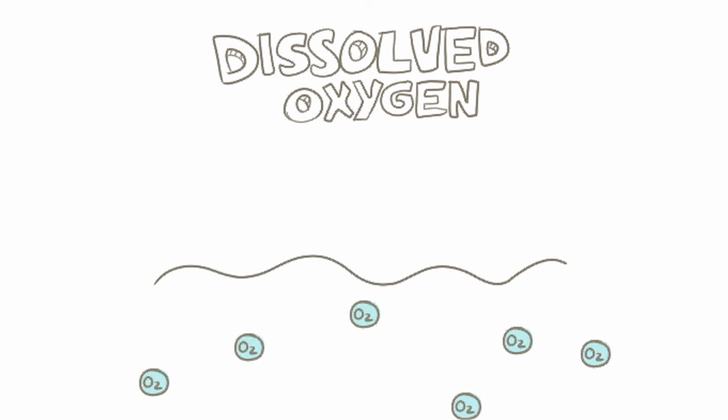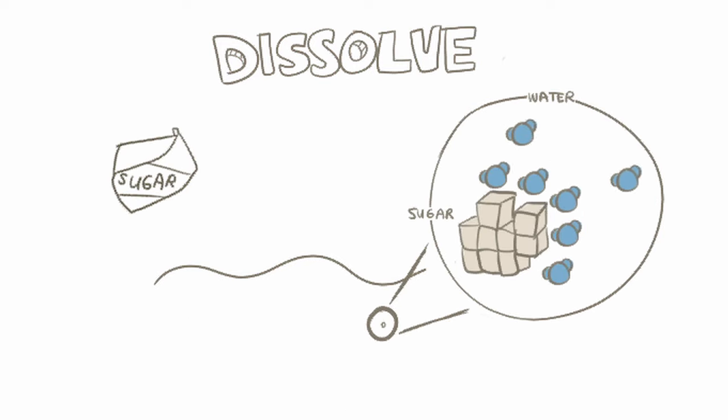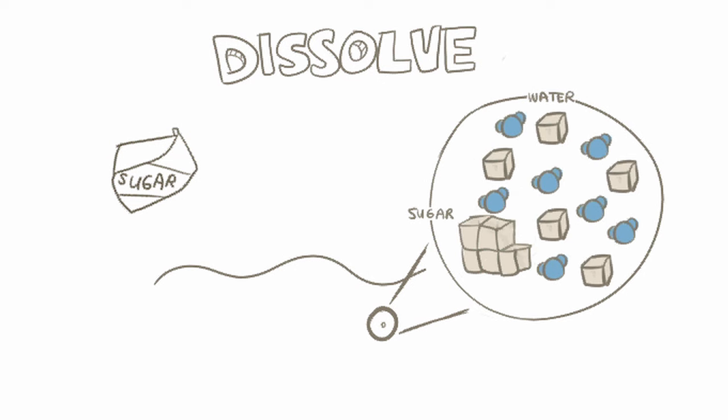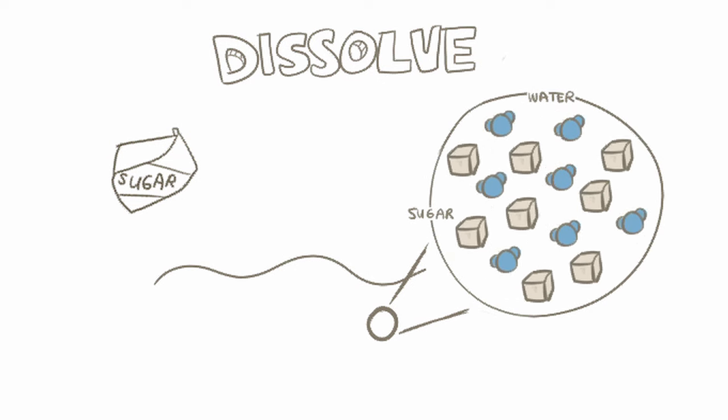What does it mean for something to dissolve? If you've ever mixed sugar and water, you've noticed that the sugar seems to disappear. But what really happens is that the molecules of water mix with and surround the sugar molecules, breaking up the large sugar granules to make a sugar-water mixture.